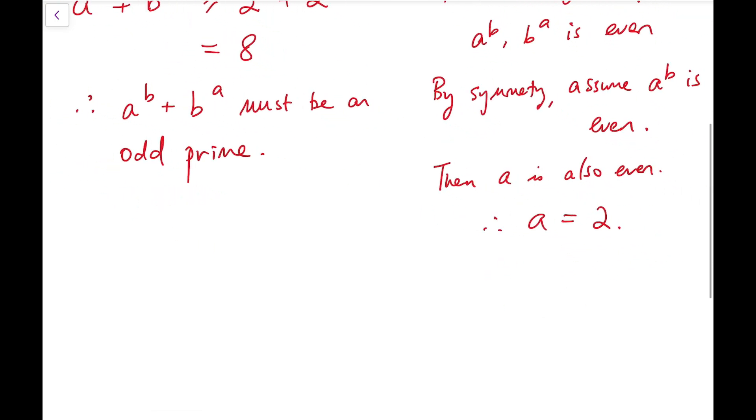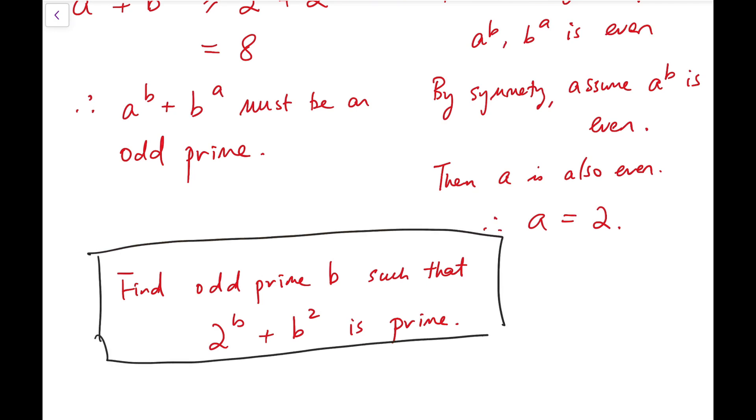So we can rephrase the question and say, find odd prime B. We know that now A to the B is even, so B to the A is odd. So B is odd. Find odd prime B such that 2 to the B plus B squared is prime. So now we have rephrased the question to this.